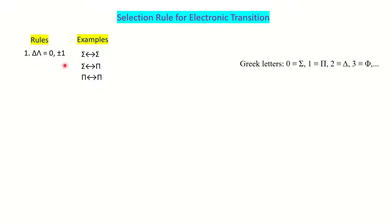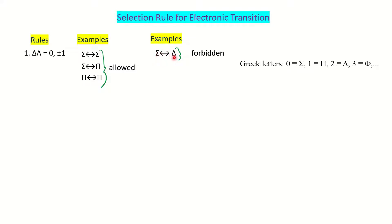Applying Rule 1: Σ→Σ (0→0, Δλ=0) is allowed; Σ→Π (0→1, Δλ=1) is allowed; Π→Π (1→1, Δλ=0) is allowed. For forbidden examples: Σ→Δ (0→2, Δλ=2) is forbidden because the selection rule only permits Δλ = 0 or ±1, not ±2. This is the first selection rule.